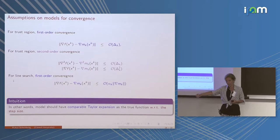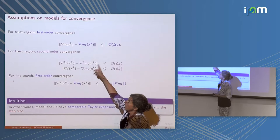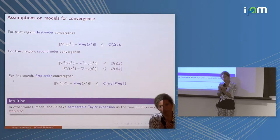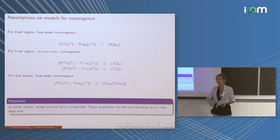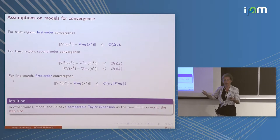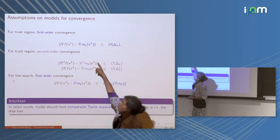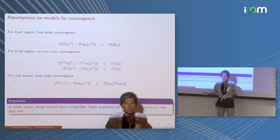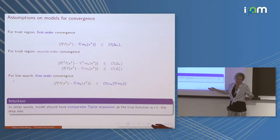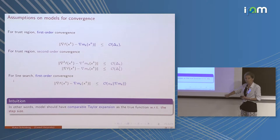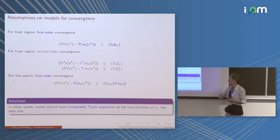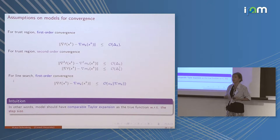In trust region methods, delta_k is the trust region radius. In line search you have the step size instead. This says: if I'm making steps of a certain length, my gradient should be that accurate. In the beginning of optimization I can have very crude models because gradients don't have to agree very well — this number is large, my steps are large. As I'm getting to a flatter part of the function, I make shorter steps and need more accurate models.